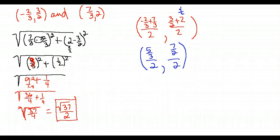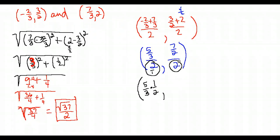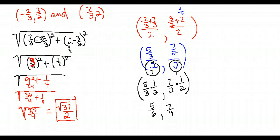We have complex fractions, so we invert the denominator and multiply. Five thirds divided by two is five thirds times one half, which gives five sixths. Seven halves divided by two is seven halves times one half, which gives seven fourths. So the midpoint between these two points is (5/6, 7/4). That gives you an overview of the distance and midpoint formulas.